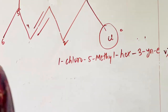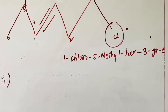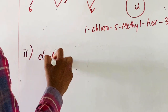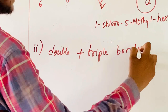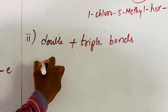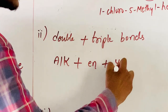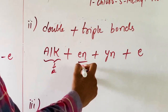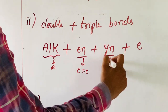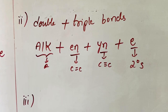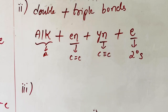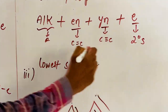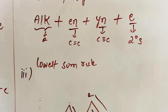Now, if the parent chain contains both double and triple bonds, the parent name is given as ALK + EN + YN + E. Here 'alk' is the word root, 'en' represents carbon double bond carbon, 'yn' represents carbon triple bond carbon, and small 'e' represents the secondary suffix hydrocarbon. If it contains both double and triple bonds, numbering is based on the lowest sum rule. Numbering from right gives double bond between one and two.